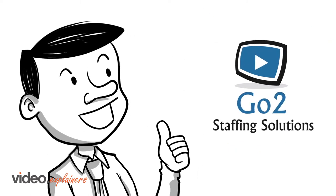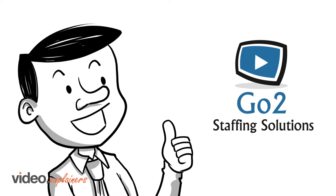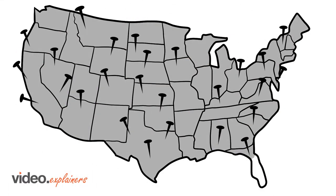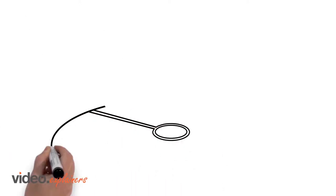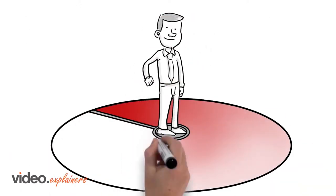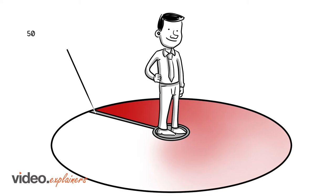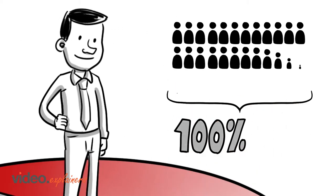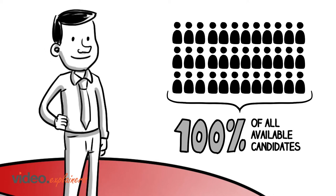GoTo Staffing Solutions business model is predicated on exactly that. Offering companies throughout the United States our recruiting and on-site management platform, while guaranteeing in writing that we will not staff any other organizations within a 50-mile square radius. That means you receive 100% of all available candidates in your market.